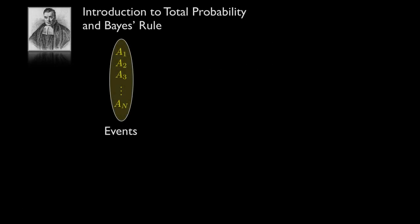To introduce the concepts of total probability and Bayes' rule, think about a set of events you might be interested in. This set of events might be labeled: the first event we call A1, the second A2, the third A3, and if there are capital N of those, the last would be called A sub N.